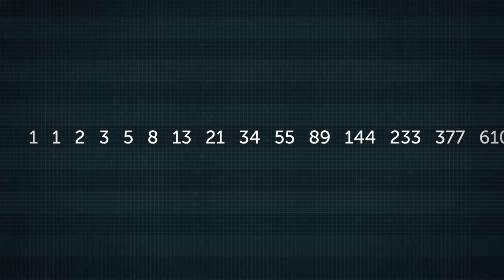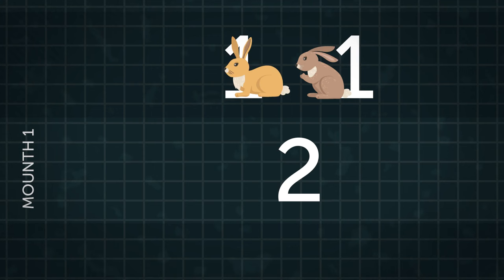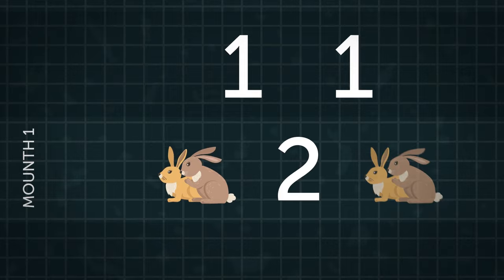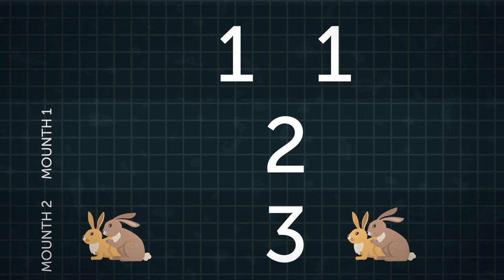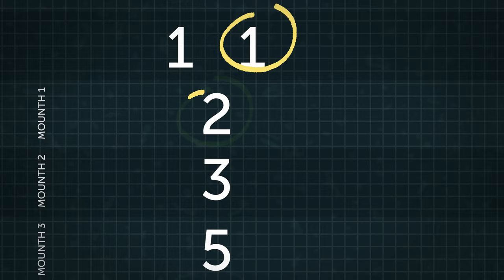Using these assumptions, Fibonacci noticed the following sequence: 1, 1, 2, 3, 5, 8, 13, 21, 34, 55, 89, 144, and so on. The first two numbers represent the initial pair of rabbits. The next number, 2, represents the number of pairs after the first month — one pair of initial rabbits plus one pair of offspring. He soon noticed that each number in the series is the sum of the previous two numbers.